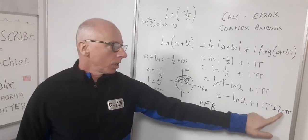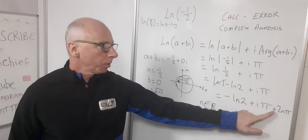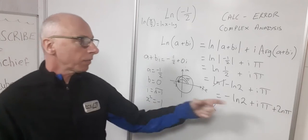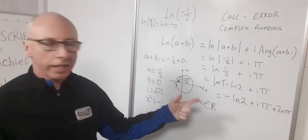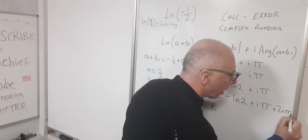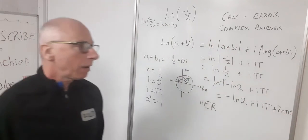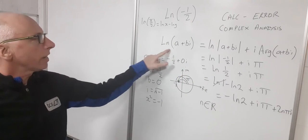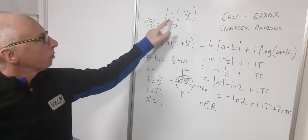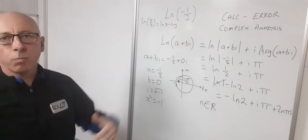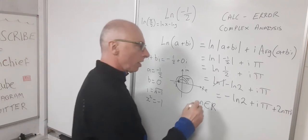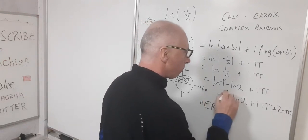We could have plus i-pi plus two n-pi, and then we have to multiply this by i again as well, two n-pi i. And that will give us our infinite solutions to the natural log of a plus bi, which we have the natural log of minus half with our original question. This will give us our result.